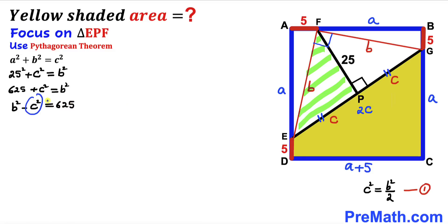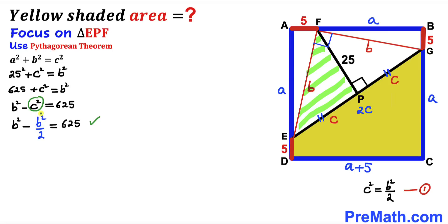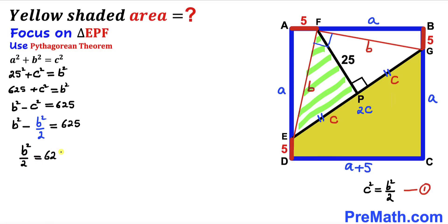We know from equation one that c² = b²/2, so I'm going to substitute b²/2 in place of c². We get b² - b²/2, which is the same as b²/2, equals 625. Multiplying both sides by 2 to isolate b², the twos cancel and b² = 1250. Let me call this equation number two.